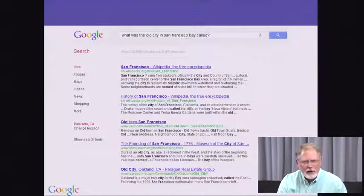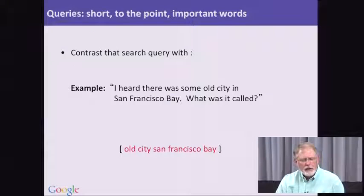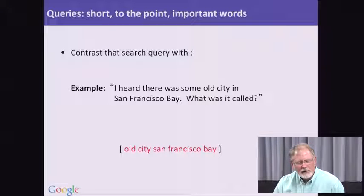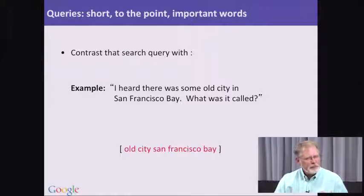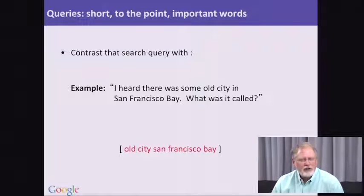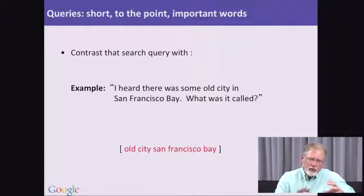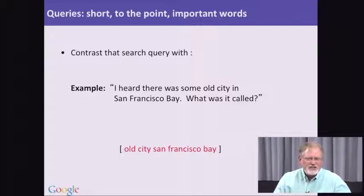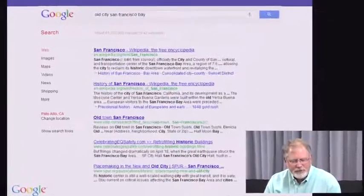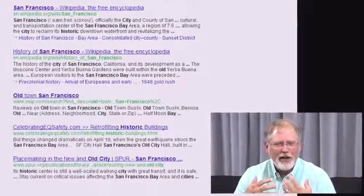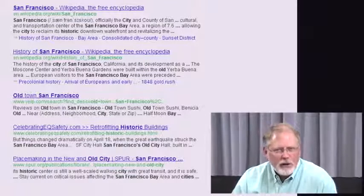Let's try a different way of thinking about the same problem. A better query focuses on just the key idea: 'old city San Francisco Bay.' We've gotten rid of the extra English-language filler that surrounds the way you normally think about it. But look at the results — they're not all that much better. What's going on?